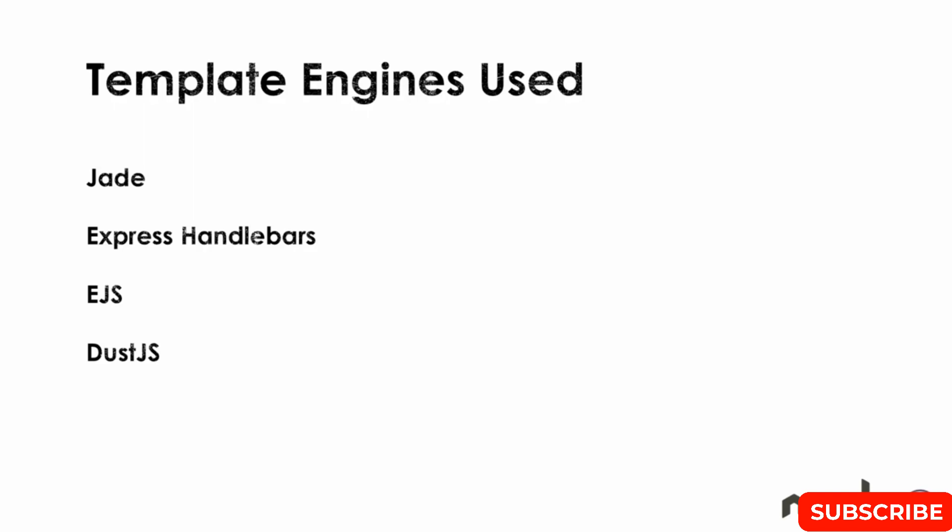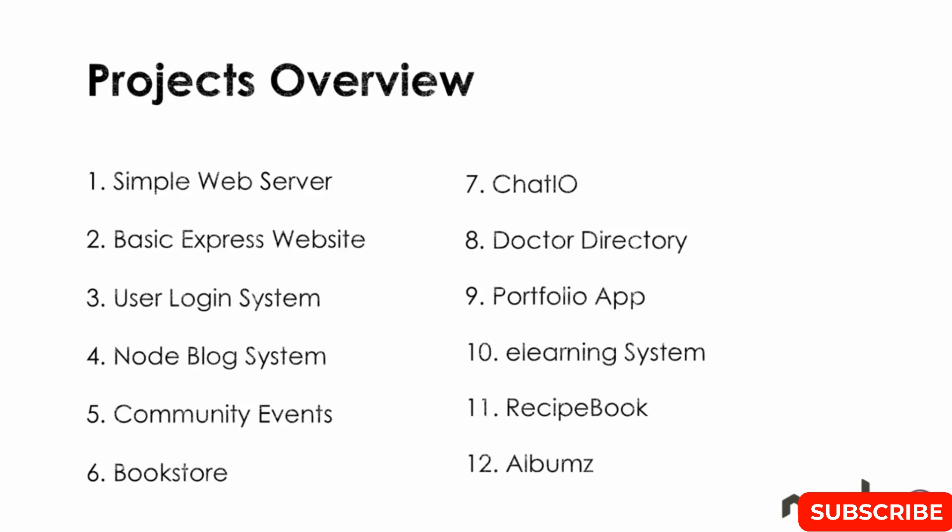Template engines we'll be using include Jade, which is really popular with Express, Handlebars, EJS, and Dust.js. Here's an overview of the projects: first we'll have a simple web server — very basic — taking the sample code from the Node.js website and expanding on it. Project 2 will be a basic Express website to introduce Express.